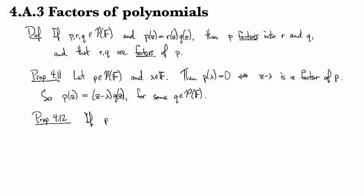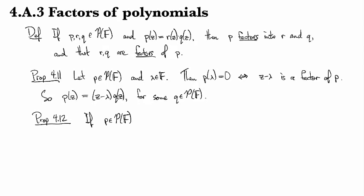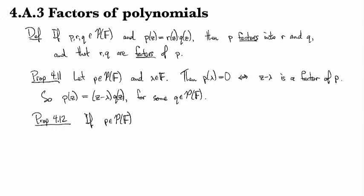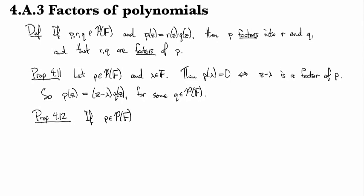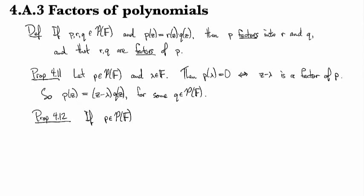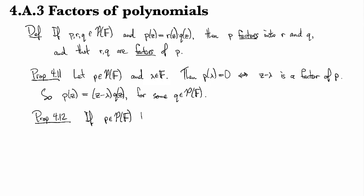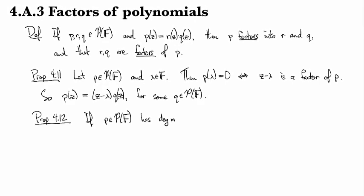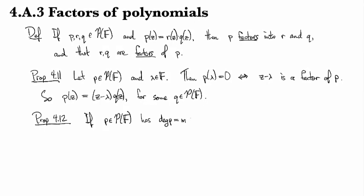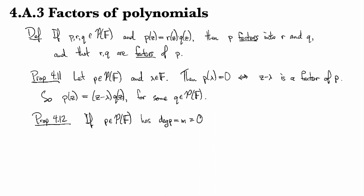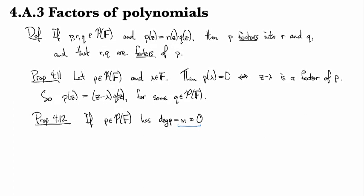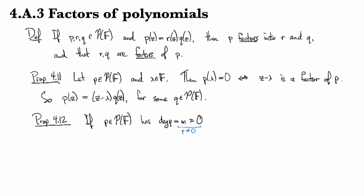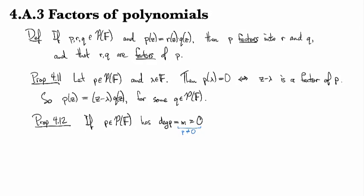If we have some polynomial P—well, I guess it could be a constant—so if P is our polynomial and has degree M, and M is at least zero, we're just ruling out that P is not the zero function, because remember that has degree minus infinity for some weird reason.